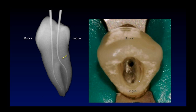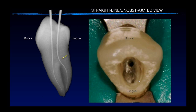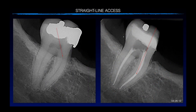This is, of course, an in vitro situation. But by doing that — having a straight line and being able to see all canals — will facilitate the cleaning and shaping tremendously. I really take my time on that and take it very seriously. Sometimes I'm in the middle of a cleaning and shaping process, and if I'm struggling, I stop and maybe improve my access a little bit. Maybe I haven't removed enough of that little bulge of dentin. Straight line access is very, very important.